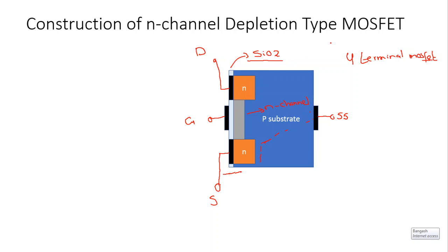Because of this silicon dioxide layer, the input impedance of the MOSFET is very high. It is because of this insulating layer of SiO2 that the input impedance of the MOSFET is very high. We know that FETs have higher input impedance than BJTs, but the highest input impedance among FETs is that of the MOSFET, and that is because of this insulating layer of SiO2.